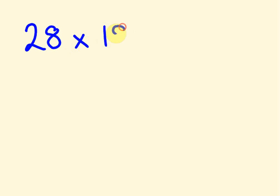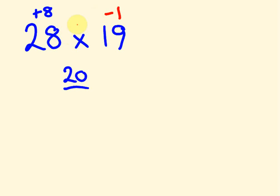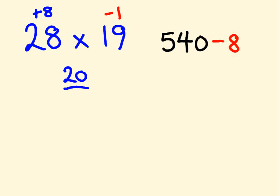Now let's try 28 times 19. We still use base 20. The 28 is 8 more than 20, but 19 is 1 less than 20. Cross addition: 19 plus 8, or 28 take 1, is 27. We double it: 27 times 2 is 54, so 540. Then we multiply the deviations: minus 1 times 8 is minus 8. So 540 minus 8 gives 532.